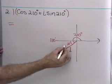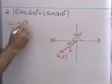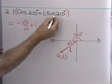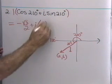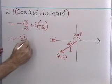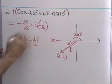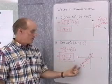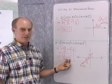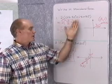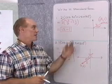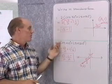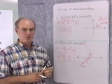In quadrant 3, cosine and sine are both negative. cos210° is −√3/2. Sine of 210°, the reference angle is 30°, so it's 1/2 in magnitude; in quadrant 3 it's −1/2. So I end up with the complex number −√3/2 − (1/2)i. That's what this complex number looks like in standard or algebraic form, with coordinates (−√3/2, −1/2). Going from trigonometric form to algebraic form is a pretty simple process — just evaluate cosine and sine of the argument angle and multiply by r.